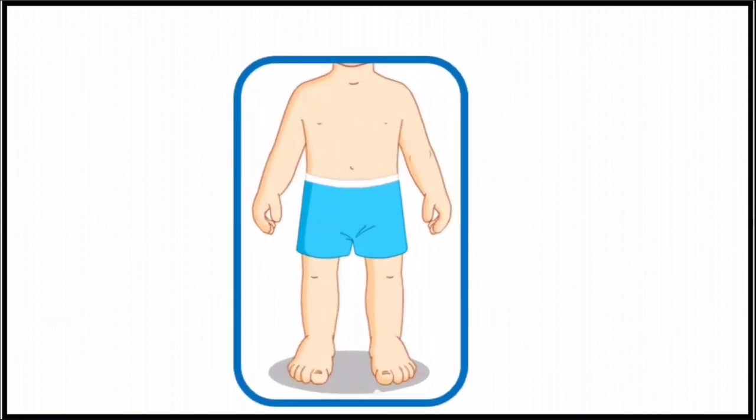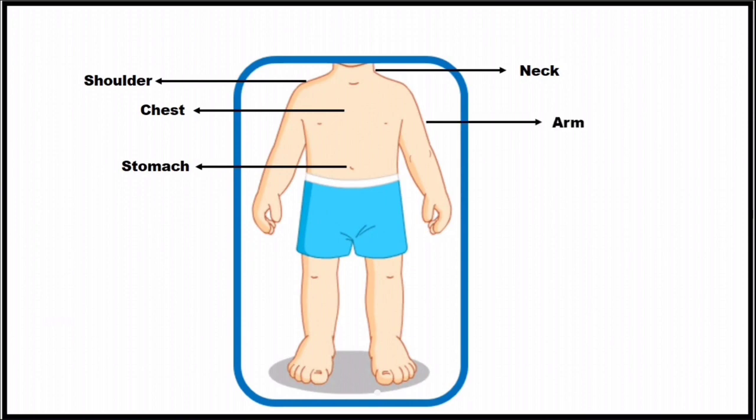First one is neck. Second one is shoulder. Then comes chest. Then comes stomach. Then comes arms. We have two arms.